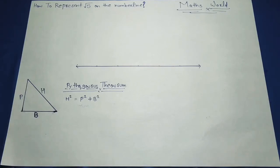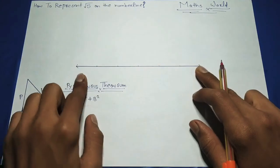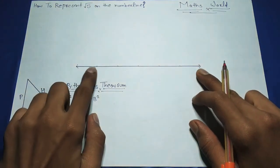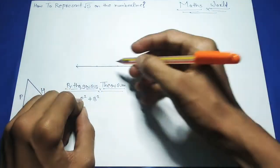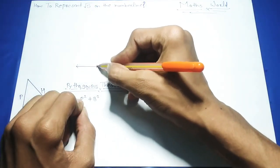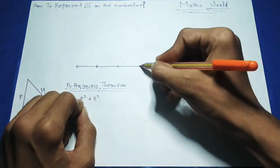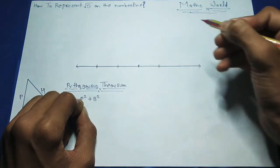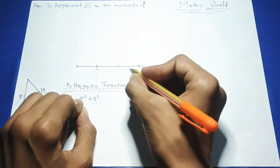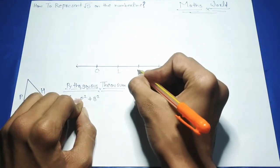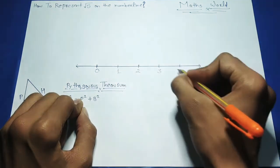Before representing square root 5, we need to draw a number line like this, with points marked as 0, 1, 2, 3, and 4.